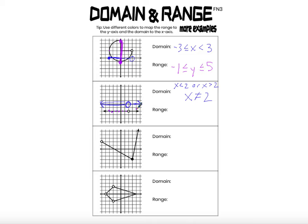So the range is y equals negative 2, or we can write that in set notation with curly brackets. This open dot doesn't matter — yes, this point does not exist on the graph, but there are an infinite number of points on the graph where y does in fact equal negative 2.